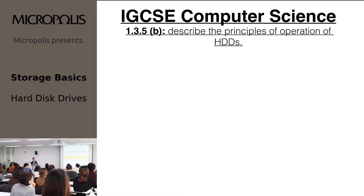IGCSE computer science syllabus statement 1.3.5b is actually pretty short compared to output or input devices, but there's still stuff to learn. The next topic, operating systems, is actually shorter — it covers operating systems, interrupts, buffers, and all that. Then there are high and low-level languages, which will only take about two videos, so we're almost done with topic three.